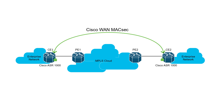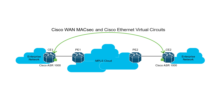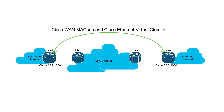This video demonstrates how you can deploy MACsec as a service with a combination of Cisco WAN MACsec and Cisco Ethernet virtual circuits using Cisco ASR1000 routers on a layer 2 circuit like EO MPLS.